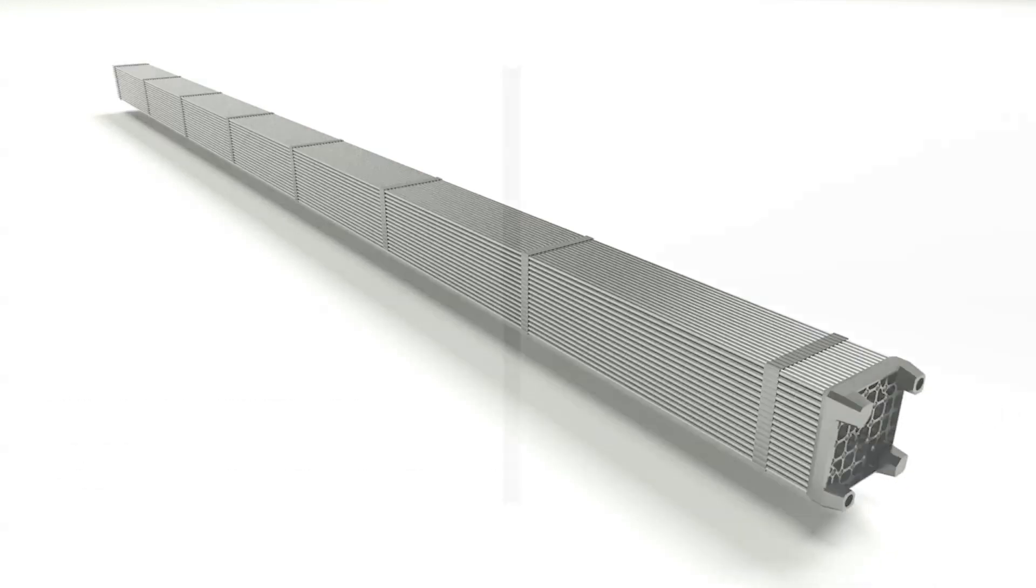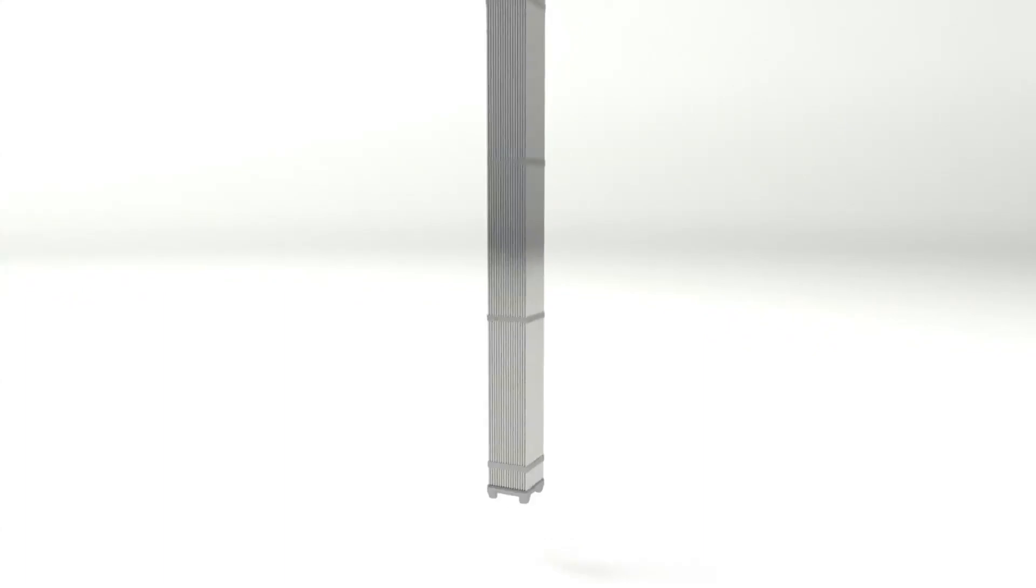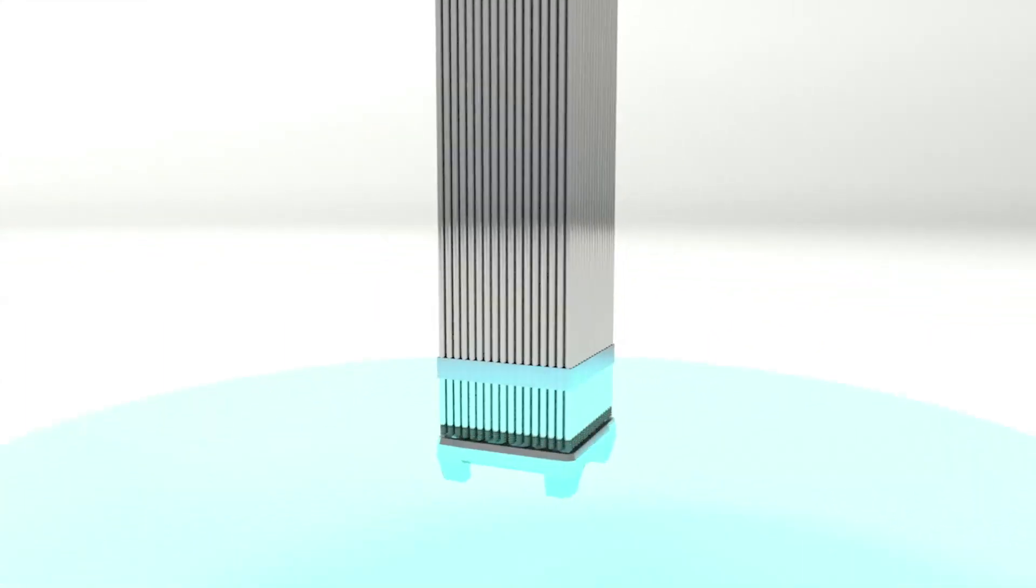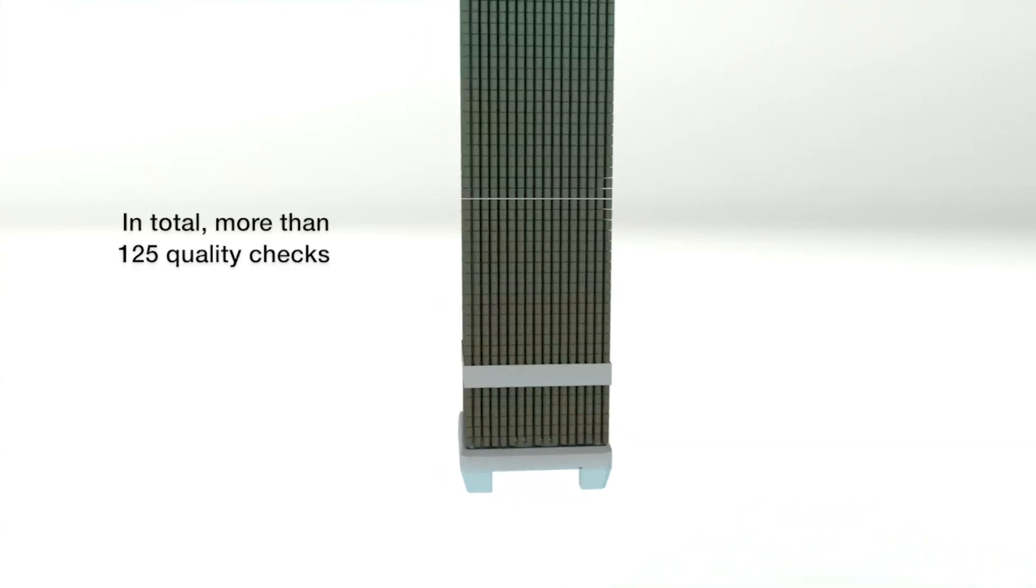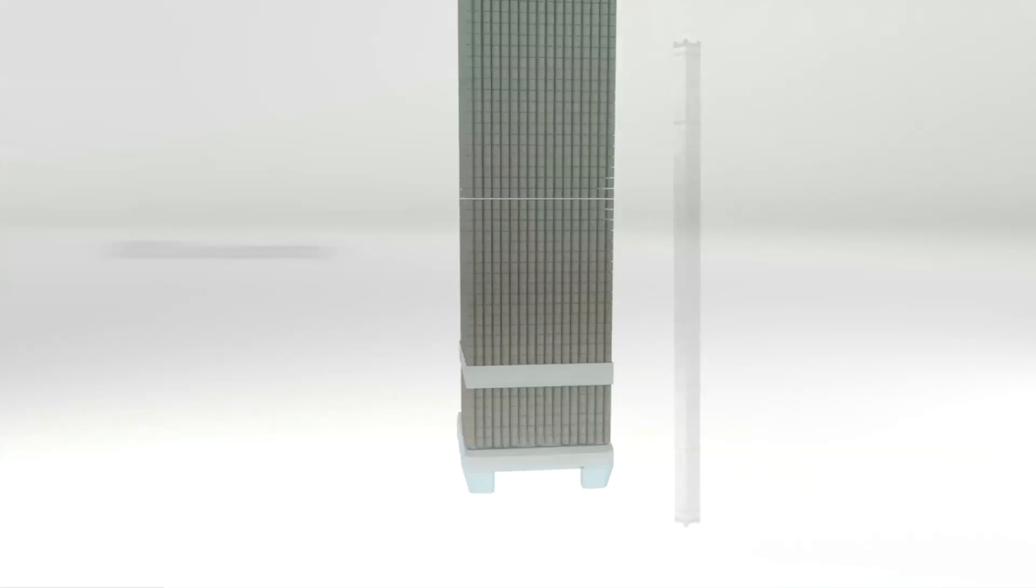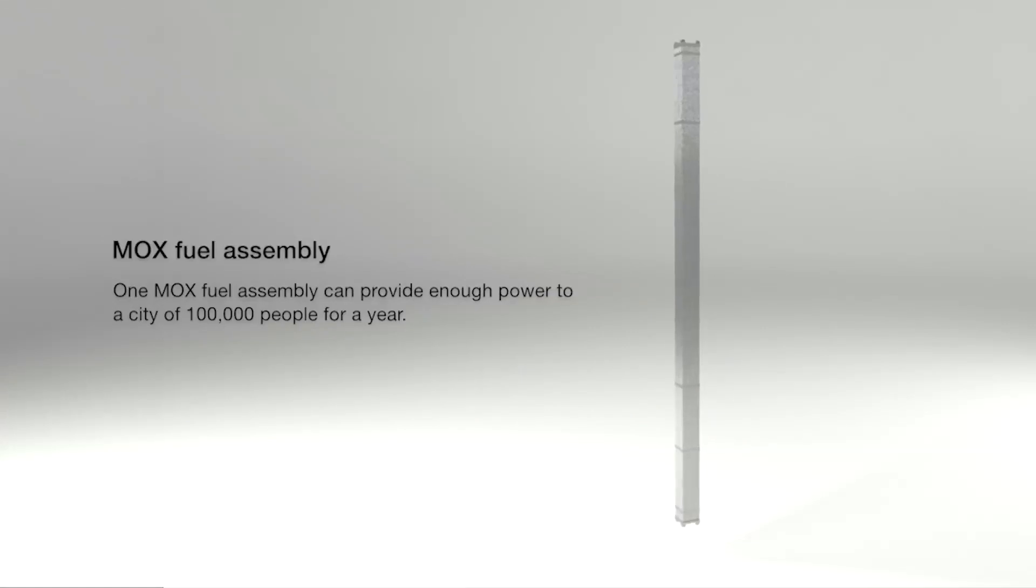Each assembly is controlled before delivery to the customer. Overall, the manufacturing process numbers more than 125 product quality controls. One MOX fuel assembly can provide enough electricity power for a city of 100,000 people for a year.